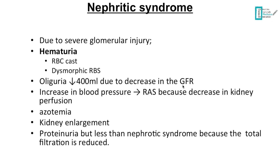So the renin-angiotensin system will be activated, blood pressure will increase, and azotemia will develop. Azotemia is a biochemical disturbance of the blood due to increasing creatinine and urea. Azotemia develops because of decreased glomerular filtration rate and kidney enlargement from the inflammatory process happening in the kidney.